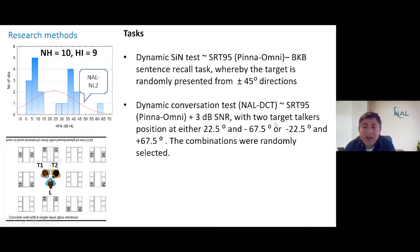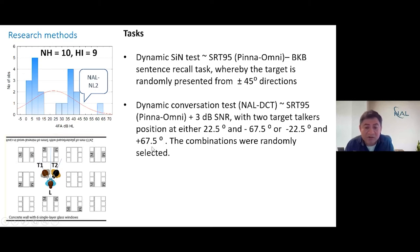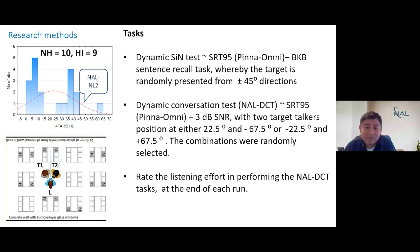We selected conversational material from two talkers positioned at plus 22 and minus 67 degrees, or minus 22 and plus 67 degrees, so they were moving to the right and left of the listener, with locations selected randomly. In addition, we asked participants to rate their degree of listening effort experienced while performing each run of the test — specifically the DCT test.